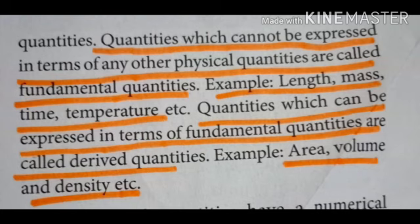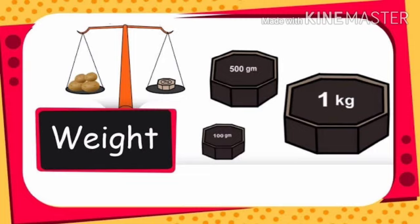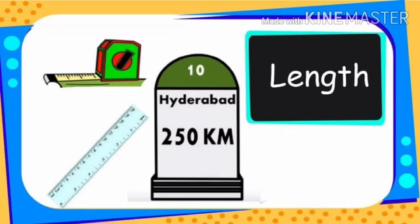Quantities which can be expressed in terms of fundamental quantities are called derived quantities — for example, area, volume, and density. How can we express a derived quantity? Area means length into breadth. Volume means area into height.